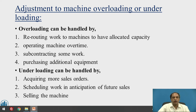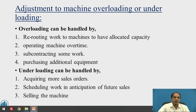For adjusting overloading, the first solution is rerouting work to machines that have allocated spare capacity. If there is overload, you can consider alternative machines or change the routing of the job itself. Machines that are not currently utilized can be brought into use by changing the sequence, rerouting the job, and making additional tooling arrangements on those idle machines.